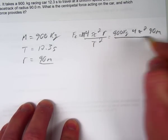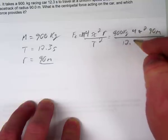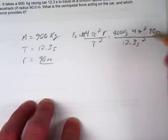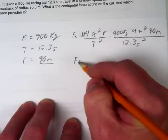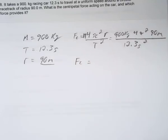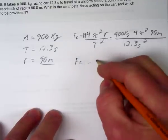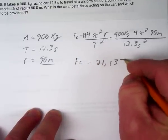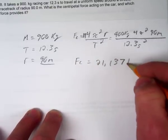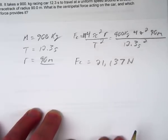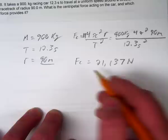T is 12.3 seconds, squared. When you put that in your calculator, the answer comes out to 21,137 Newtons.